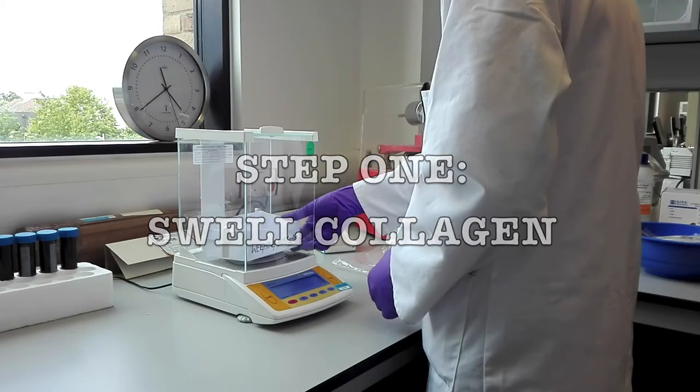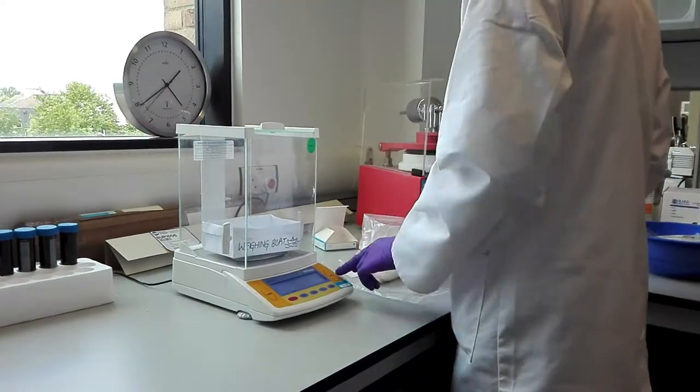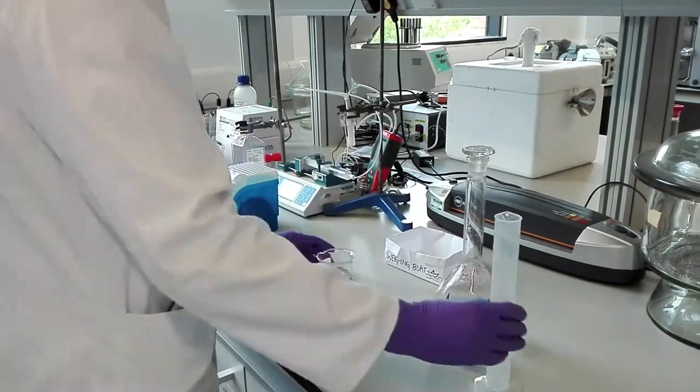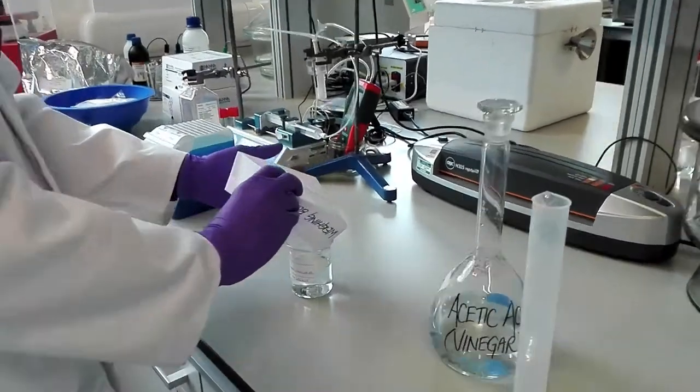Making a scaffold is like baking - you just need to follow a recipe. First, we have to measure out the ingredients. We weigh out some collagen, add it to some acetic acid (or vinegar if you prefer to call it that), and let it swell overnight.